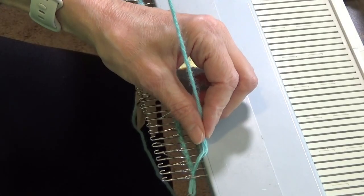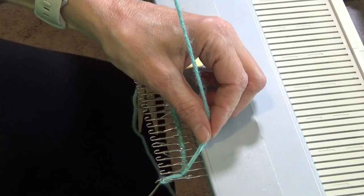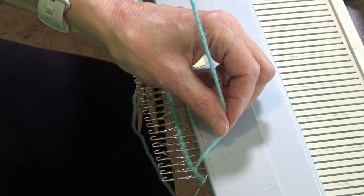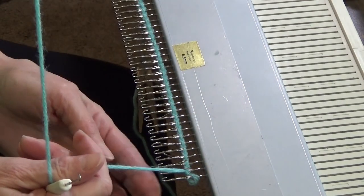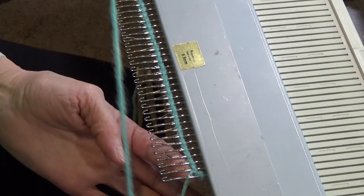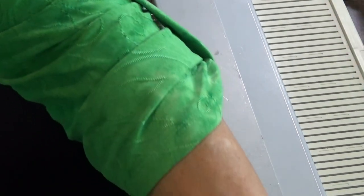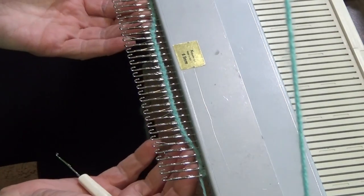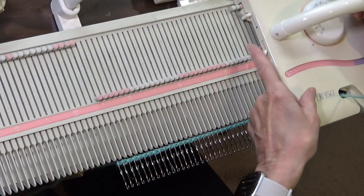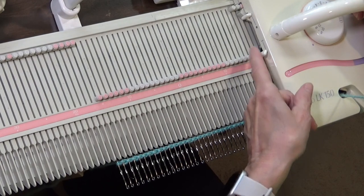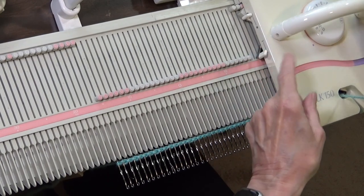When we get to the last needle, we are taking that loop and we are just placing it on that needle. Then we are taking the yarn, moving it between the first and the second needle and over and put it into our carriage. Push this knitting back to the needle bed, removing my stopper. My carriage is on knit, it is on the Roman numeral 2 on both sides.